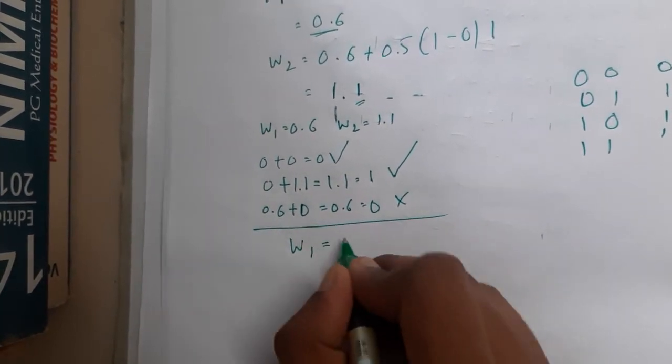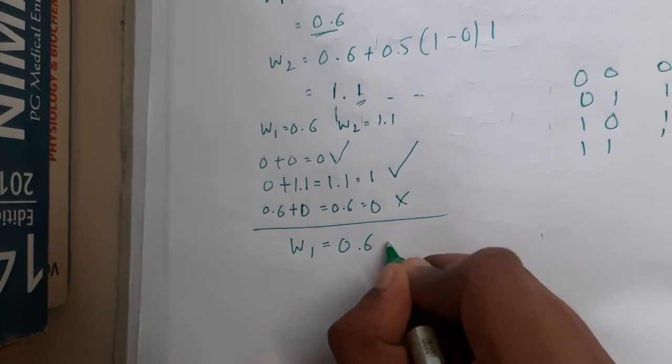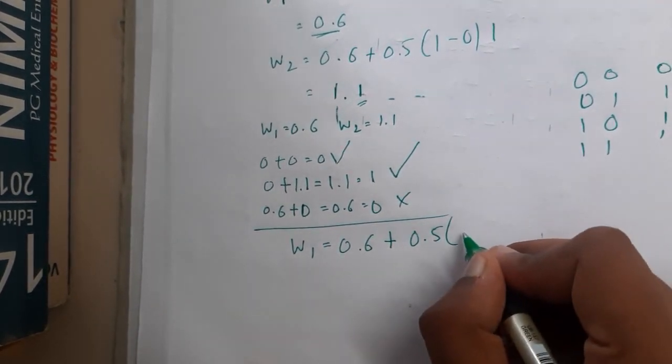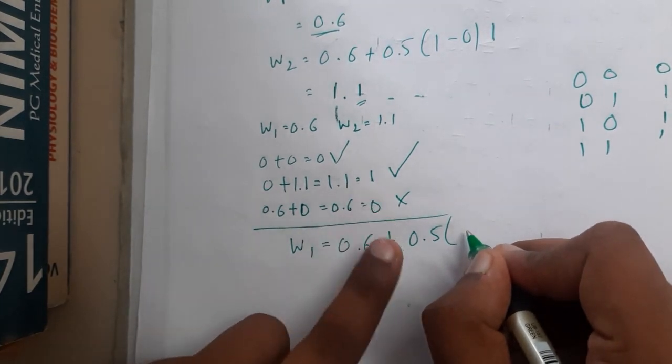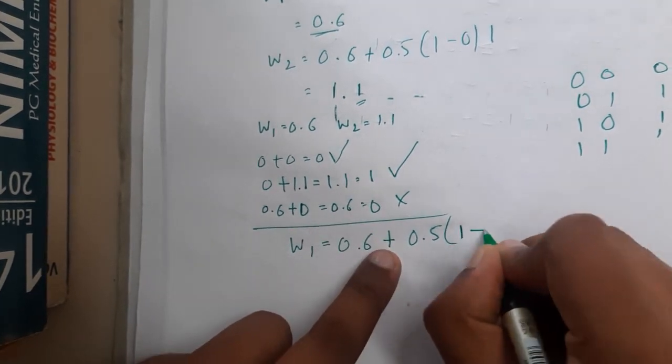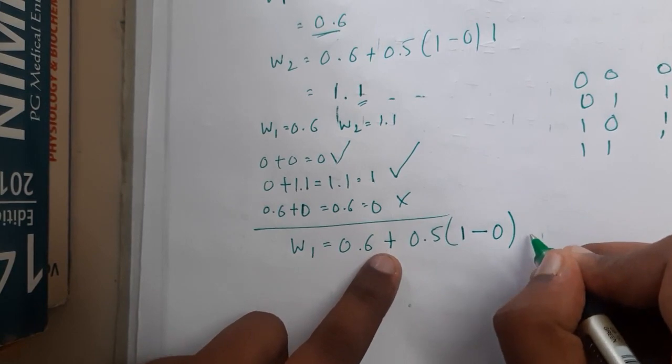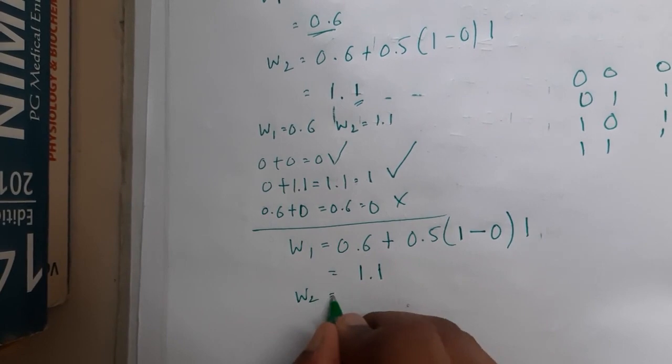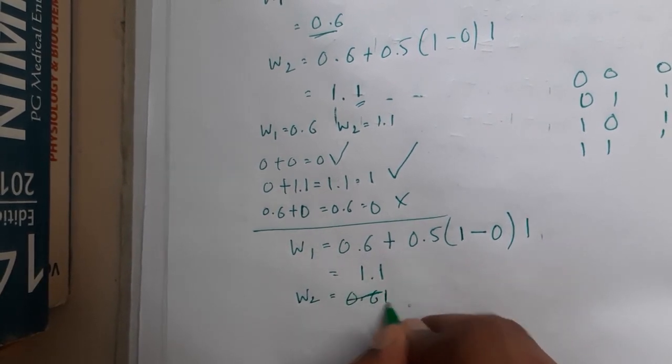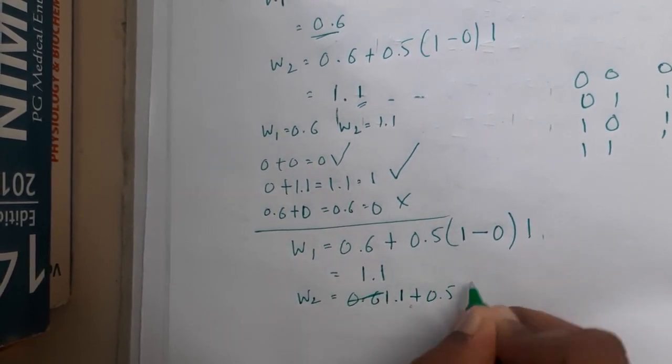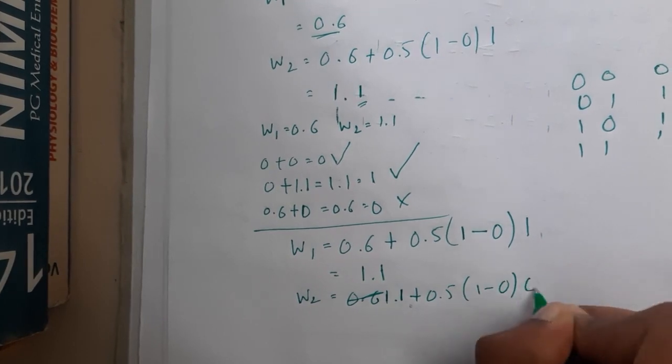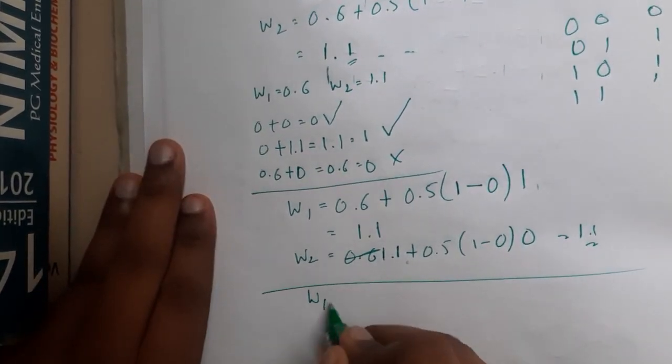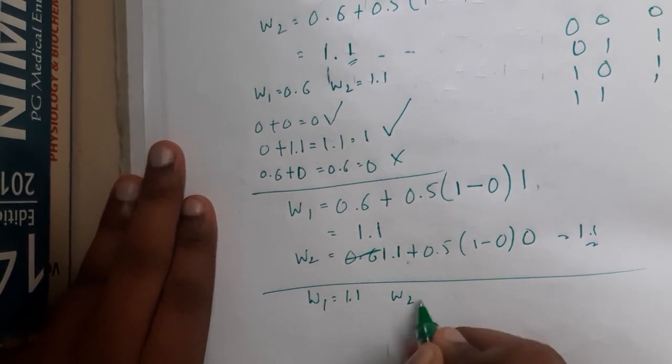Again we need to do the same method. W1 equals our current weight 0.6 plus the learning value 0.5 times (expected output 1 minus 0) times input 1, so it becomes 1.1. W2 is 1.1 plus 0.5 times (1 minus 0) times 0, so it becomes 1.1 only. Now both weights are 1.1.